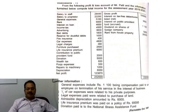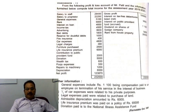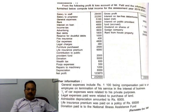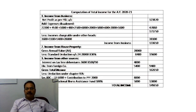Pooja expenses and repairs to machinery are allowed. Depreciation charged is 8,000; however, the additional information states admissible depreciation amounts to Rs. 6,000 — meaning there is excess depreciation of Rs. 2,000 which is disallowed. Now total all these disallowed expenses and put the figure in the outer column.